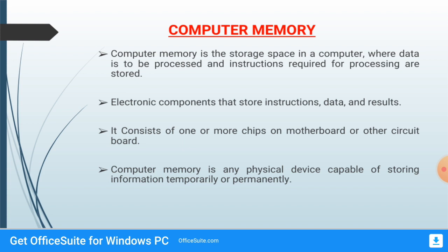After that I'll tell you the classification of memory, then primary memory and secondary memory. So let us start — computer memory is the storage space in a computer system where data, information, or results are stored.